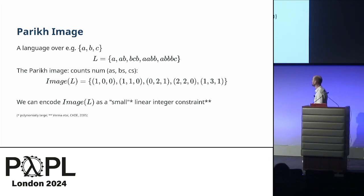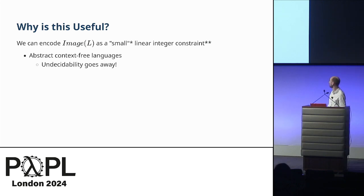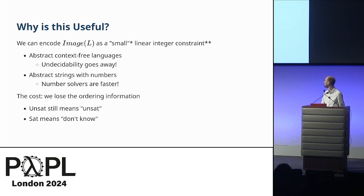One nice property of the Parikh image is that it is possible to take a context-free language and encode the Parikh image of that as a small linear integer constraint. We can write a short SMT formula that characterizes all of the counts available in that language. This is really useful because we can use it in our SMT solver. We can use it to abstract context-free languages, so those undecidability issues kind of go away. Furthermore, we can abstract strings using numbers, so we can leverage the mature, robust and quick numerical support to be able to answer queries about strings much more quickly. The cost of that, of course, is that we're abstracting, so we lose some information. We're still in the situation where if the result is unsat, we know the answer is actually unsat. But if our abstracted constraint is satisfiable, then we actually don't know. It could be sat, it could be unsat, so that means we have to grapple with the strings themselves.